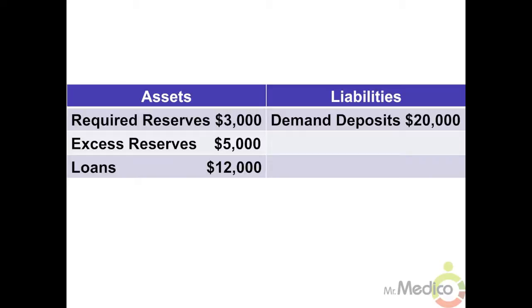In this sample balance sheet, twenty thousand dollars was deposited into checking accounts. These demand deposits are liabilities since the bank must pay depositors this money on demand. The bank stores the deposits in reserve accounts, which are recorded as assets. Banks must keep a percentage of the demand deposits as required reserves. The central bank sets the reserve requirement. On this balance sheet, the reserve requirement is fifteen percent, because three thousand dollars is fifteen percent of twenty thousand dollars.